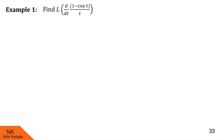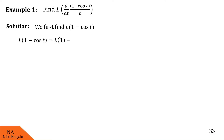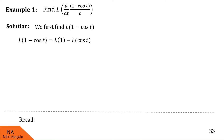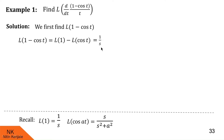We begin by considering f(t) = 1 − cos t and first find its Laplace transform. According to the linearity property, this can be written as Laplace of 1 minus Laplace of cos t. We know Laplace of 1 is 1/s, and Laplace of cos(at) is s/(s² + a²). In this case a = 1, so Laplace of cos t is s/(s² + 1). We call this function φ(s).